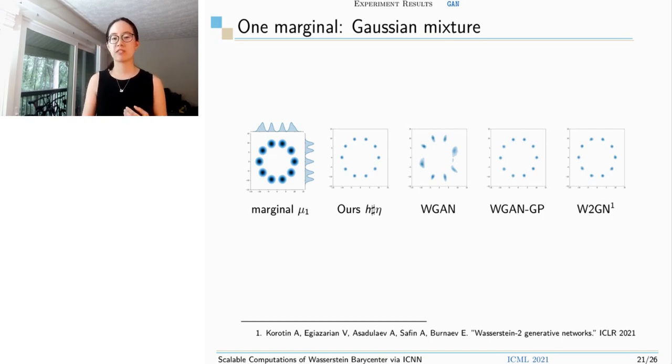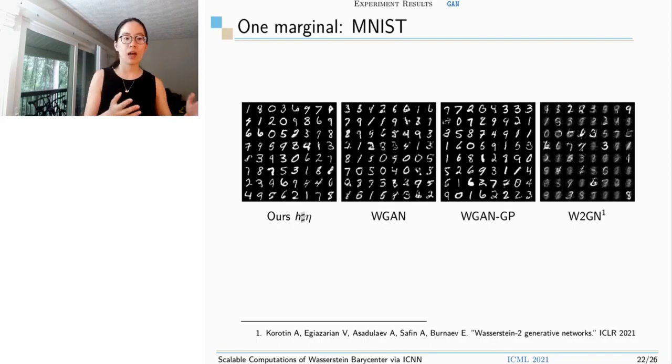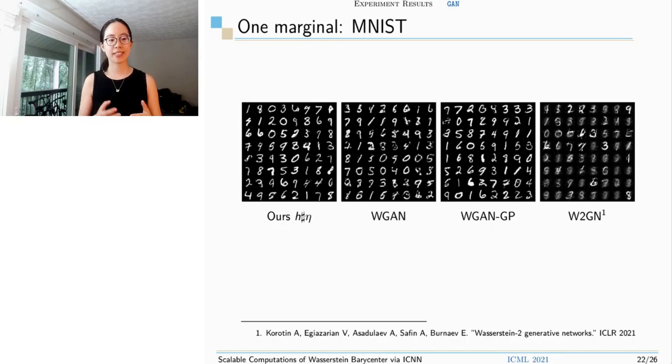For Gaussian mixture, we could avoid the mode collapse very well. For MNIST, we use MLP to train and also give reasonable results. This is a 784 dimension example. Note that the Wasserstein 2 generative network was tested originally on MNIST dataset in their paper, but the optimal transport is addressed in the feature or latent space, which dimension is much lower than 784. So that's the possible reason it doesn't perform well here.